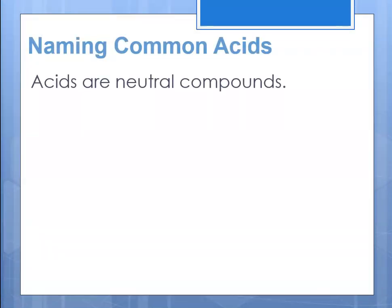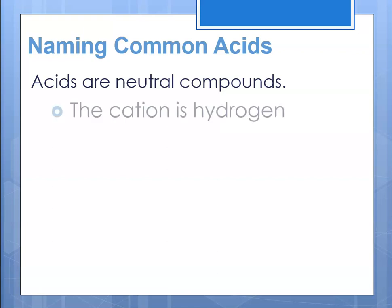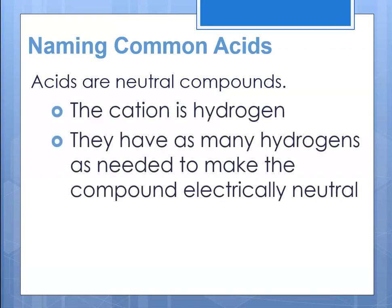In naming these common acids, we have to remember that they're neutral — if it's a compound, it's neutral. That means there will be as many hydrogens as needed to make a neutral compound. So if the anion has a charge of minus one, you'd only need one hydrogen. If the anion has a charge of negative two, you'd need two hydrogens. If the anion has a charge of negative three, you'd need three hydrogens.